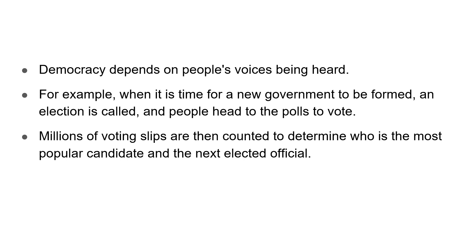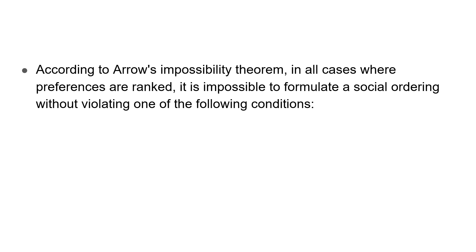Coming to Arrow's Impossibility Theorem, he was trying to connect this situation to certain already existing theories, and then he formulated his own impossibility theorem. He says that in all cases where preferences are ranked, it would be mostly impossible to formulate a social ordering without violating one of the following conditions.